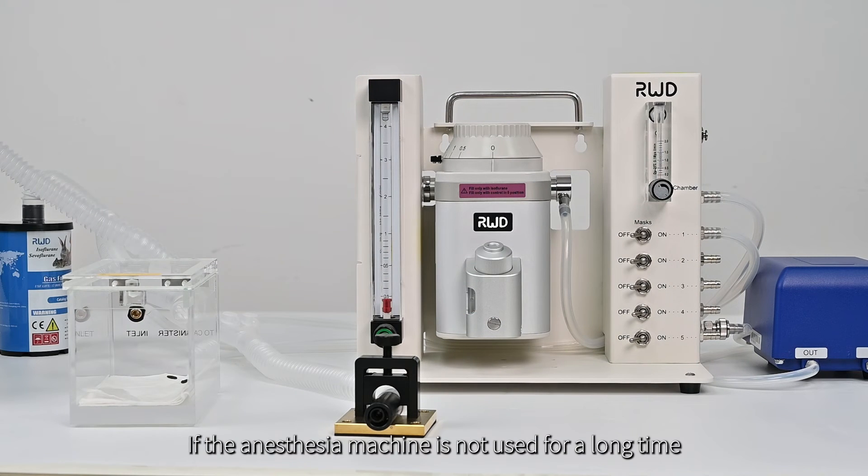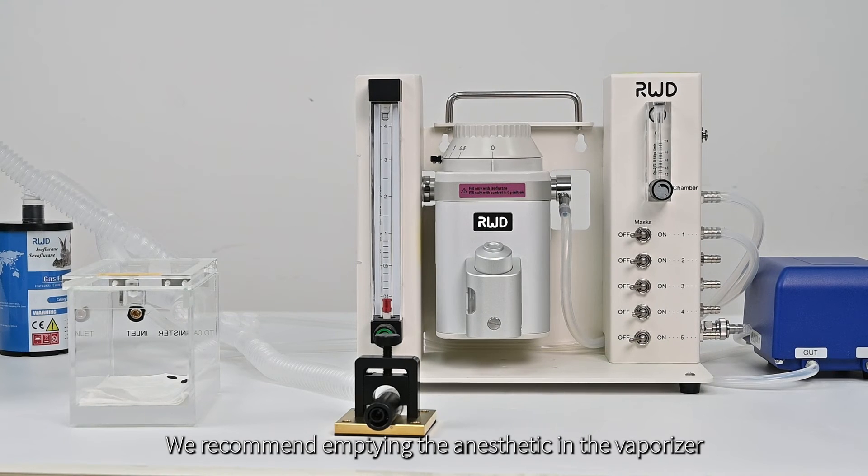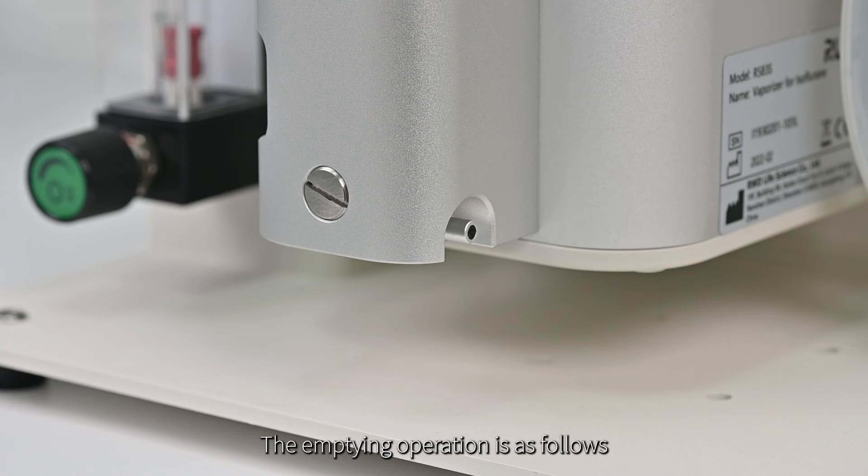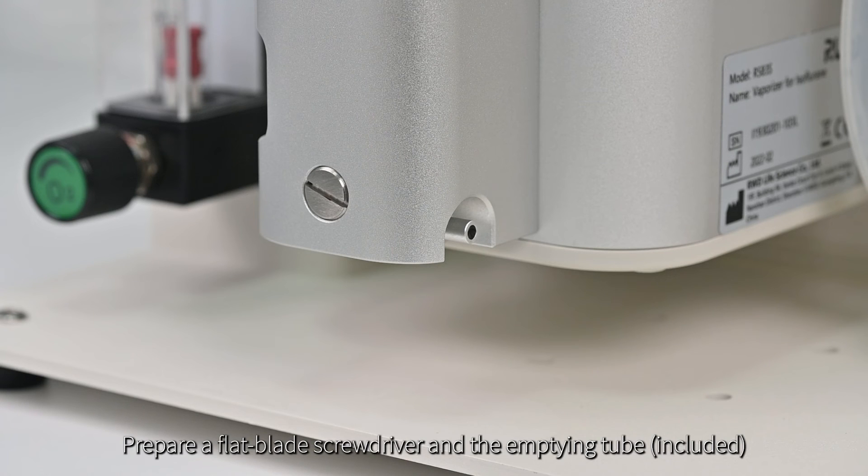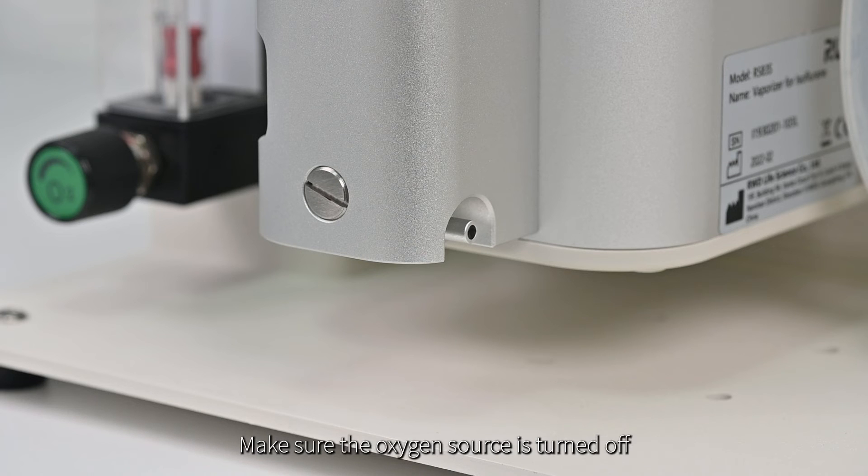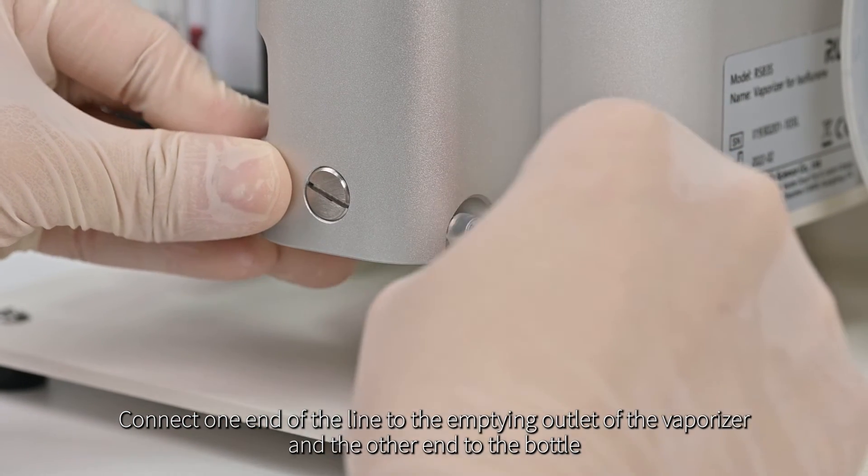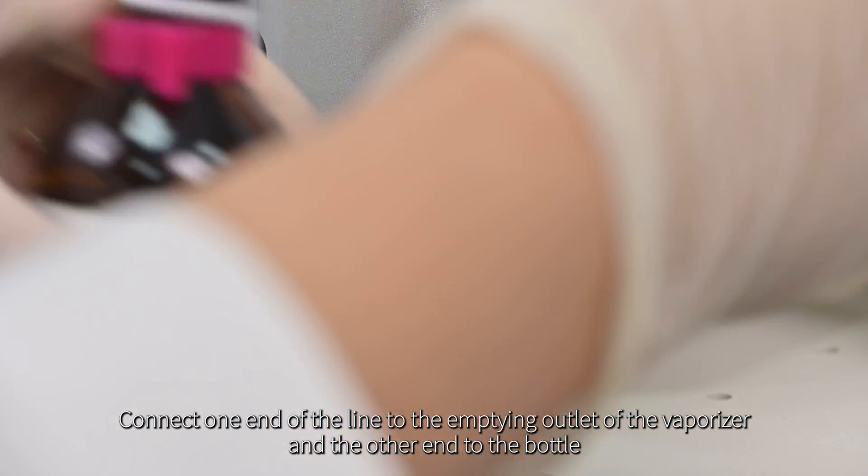If the anesthesia machine is not used for a long time, we recommend emptying the anesthetic in the vaporizer. The emptying operation is as follows. Prepare a flat blade screwdriver and the emptying tube. Make sure the oxygen source is turned off and the vaporizer dial is at the zero. Connect one end of the line to the emptying outlet of the vaporizer and the other end to the bottle.